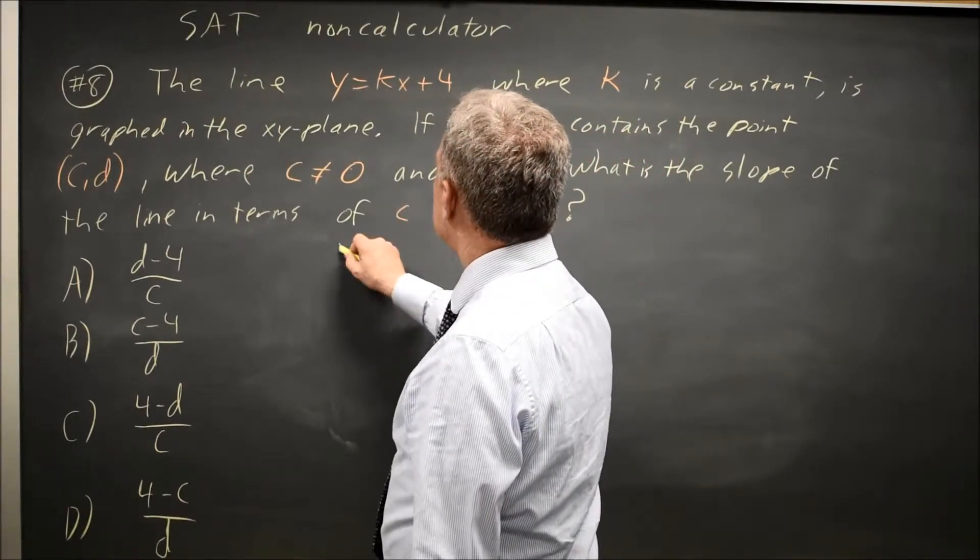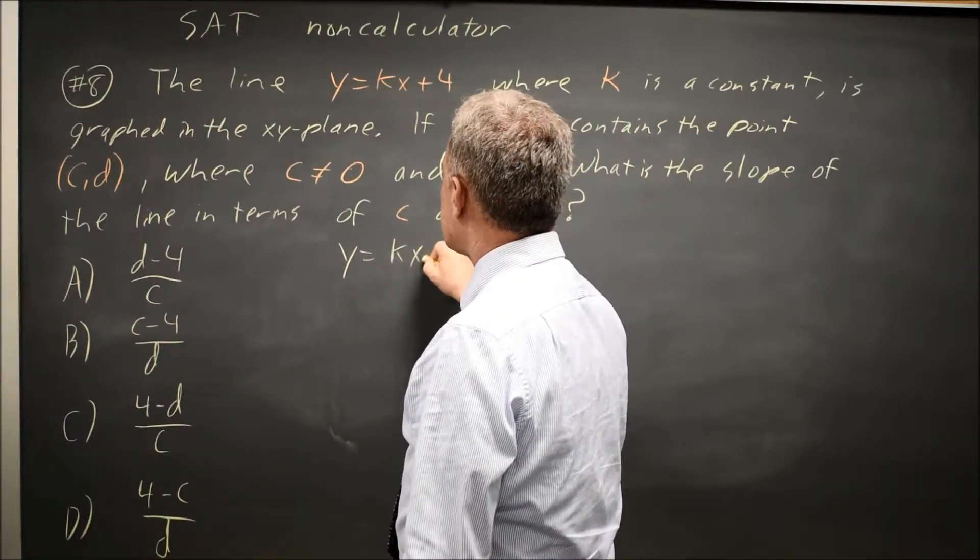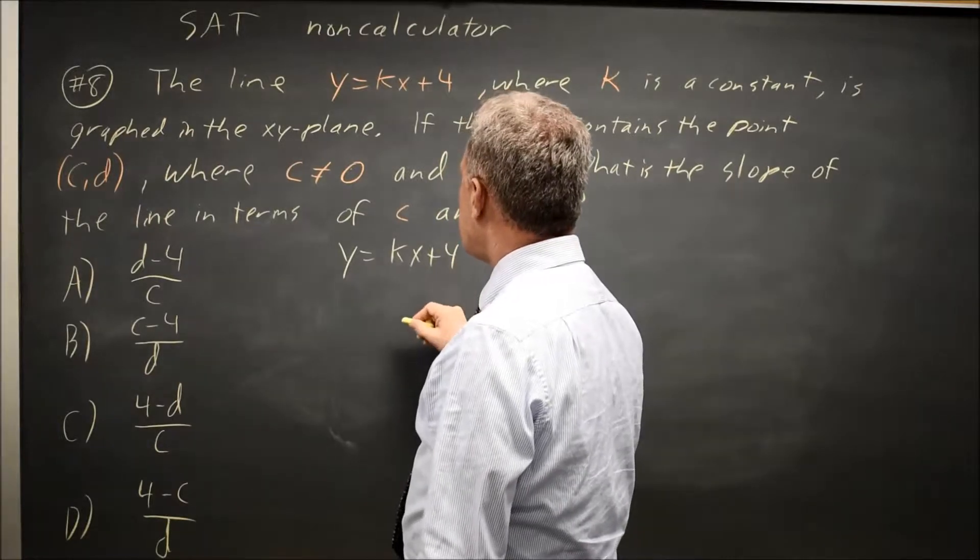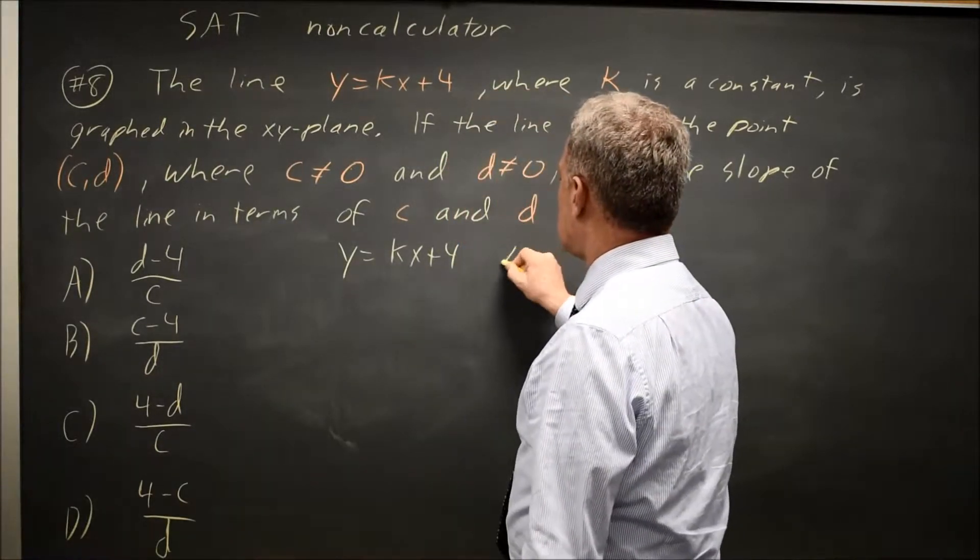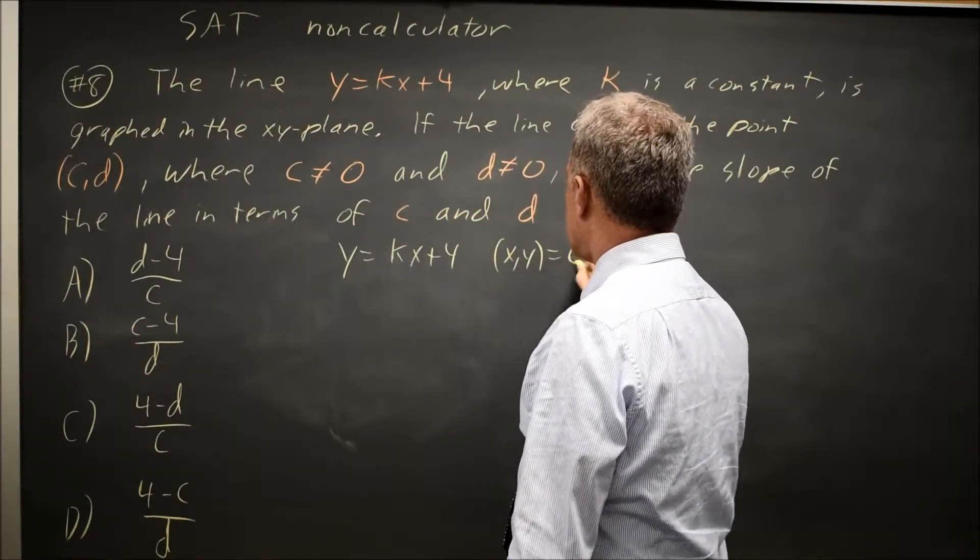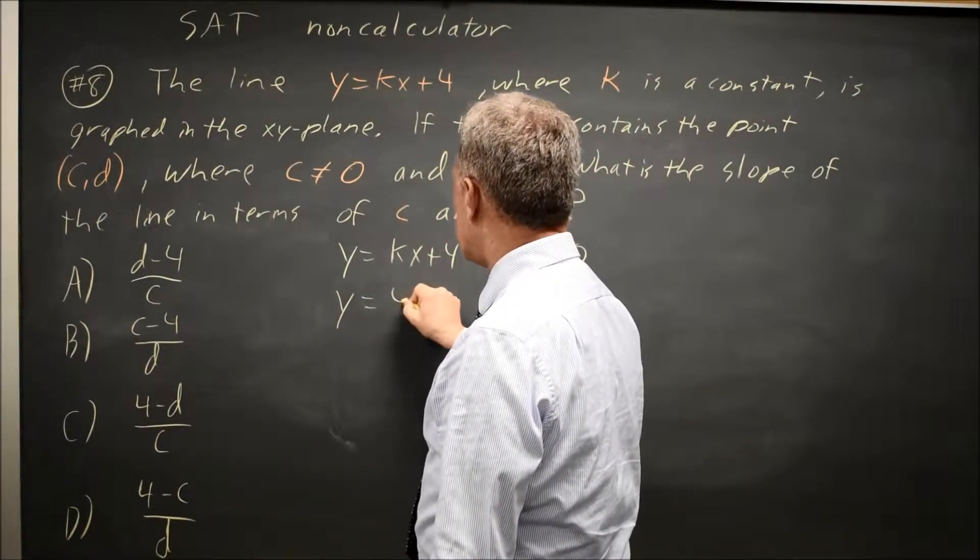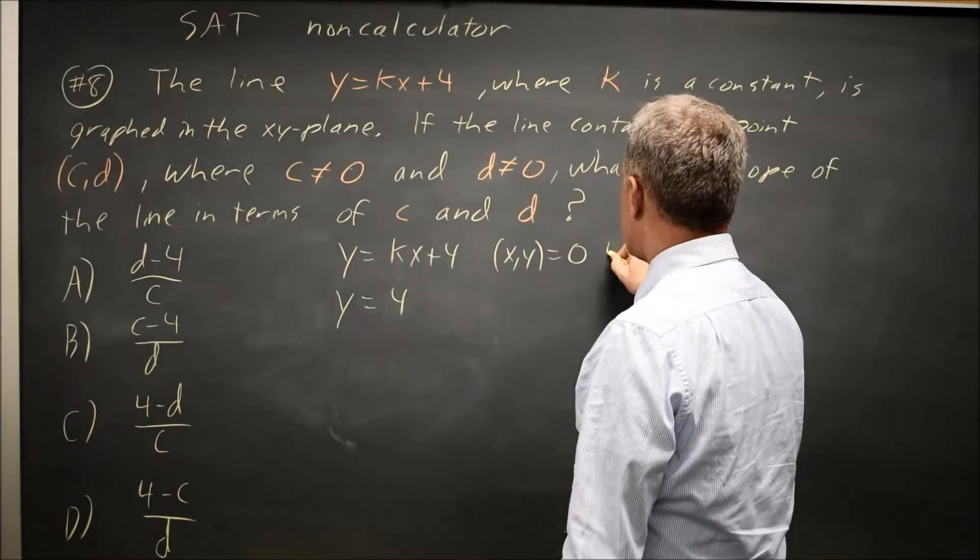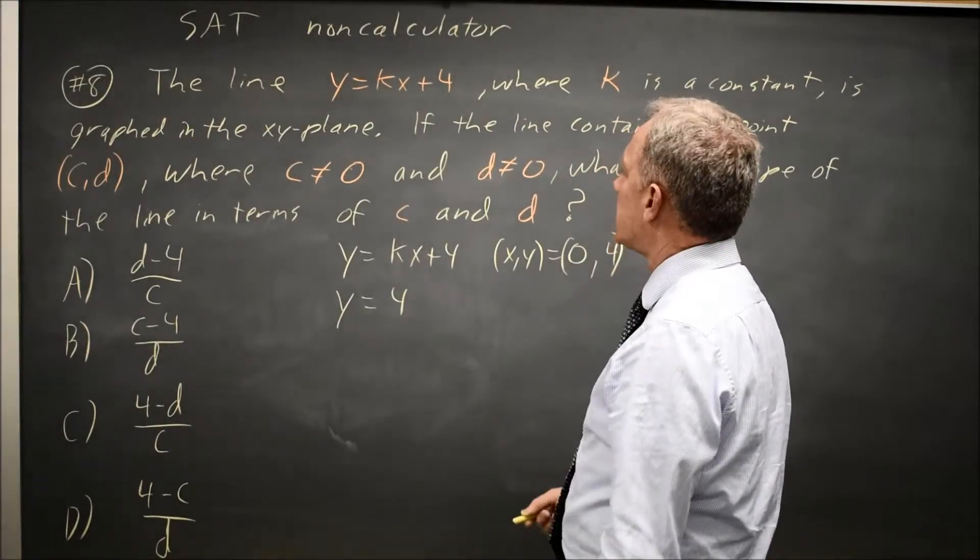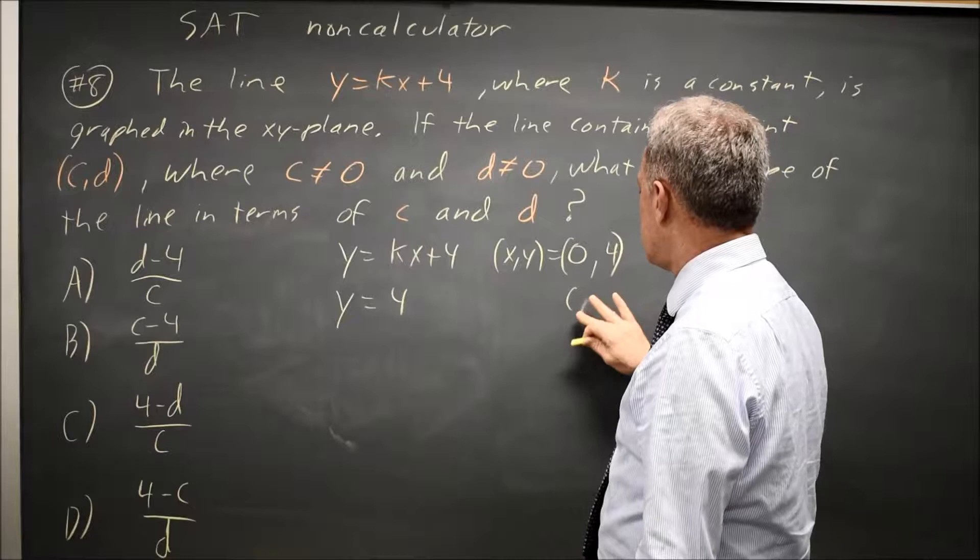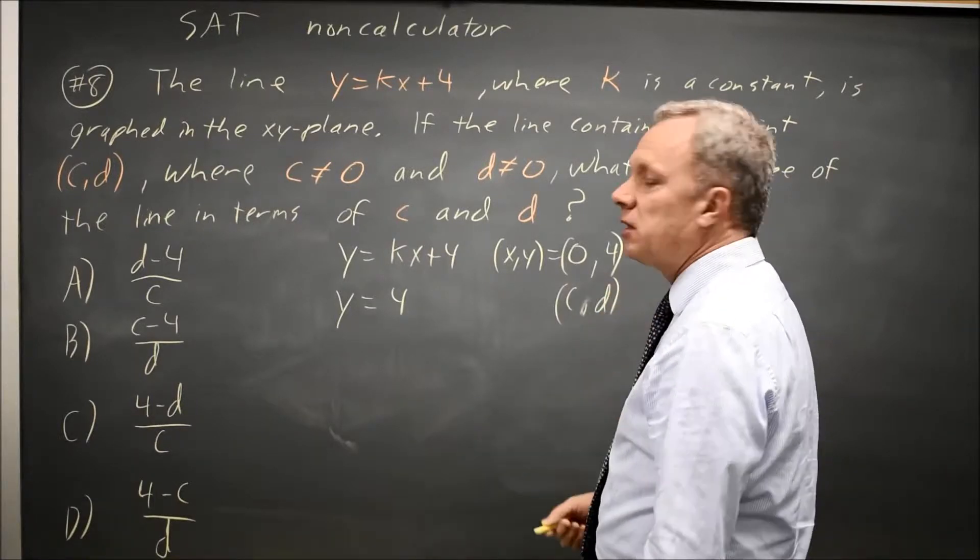Given the equation y equals kx plus 4, if x equals 0, we get y equals 0k plus 4, y equals 4. So the point (0,4) is on the line, and we also know that the point CD is on the line.